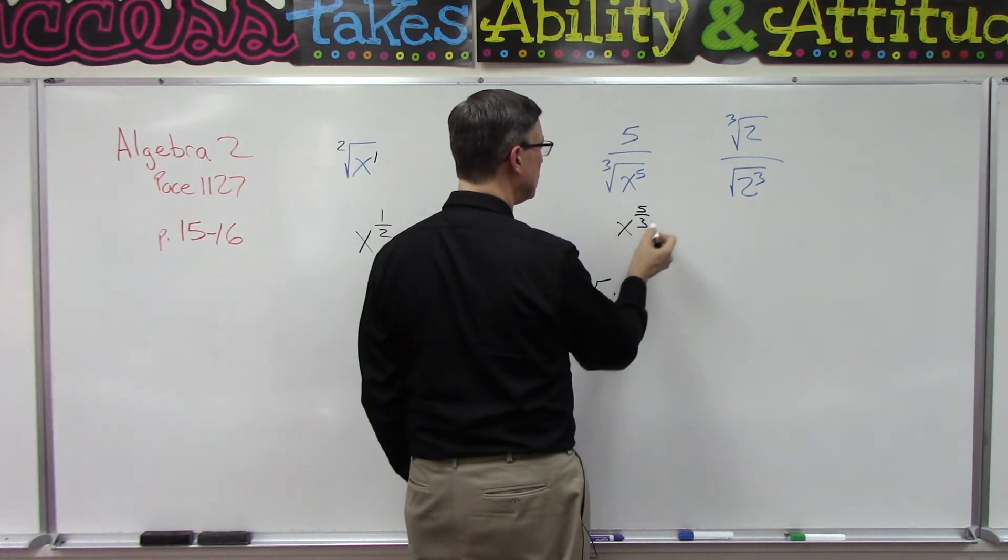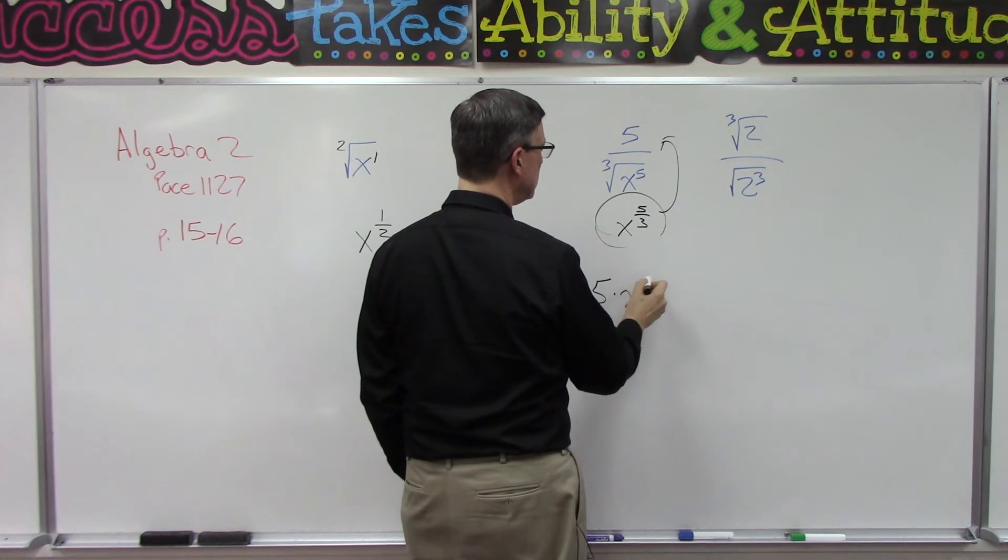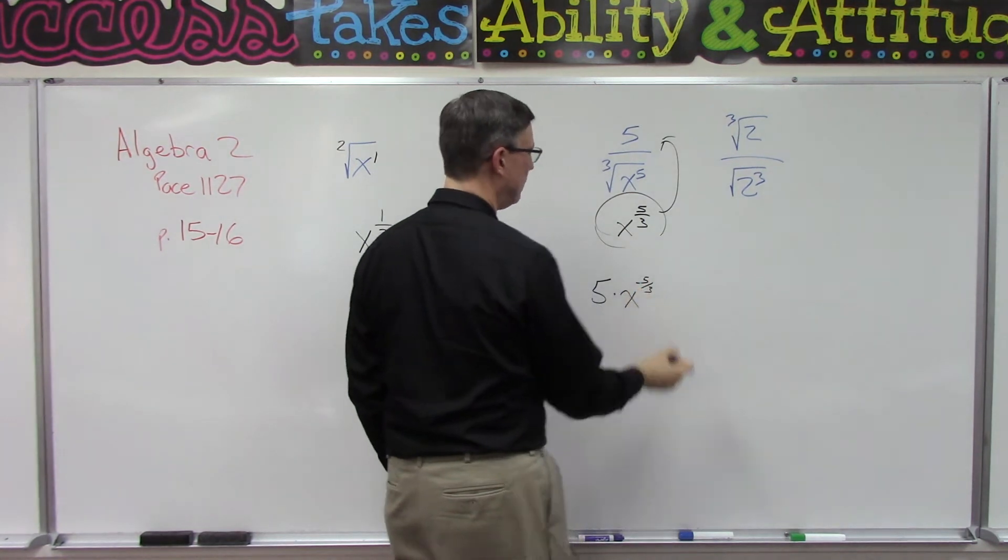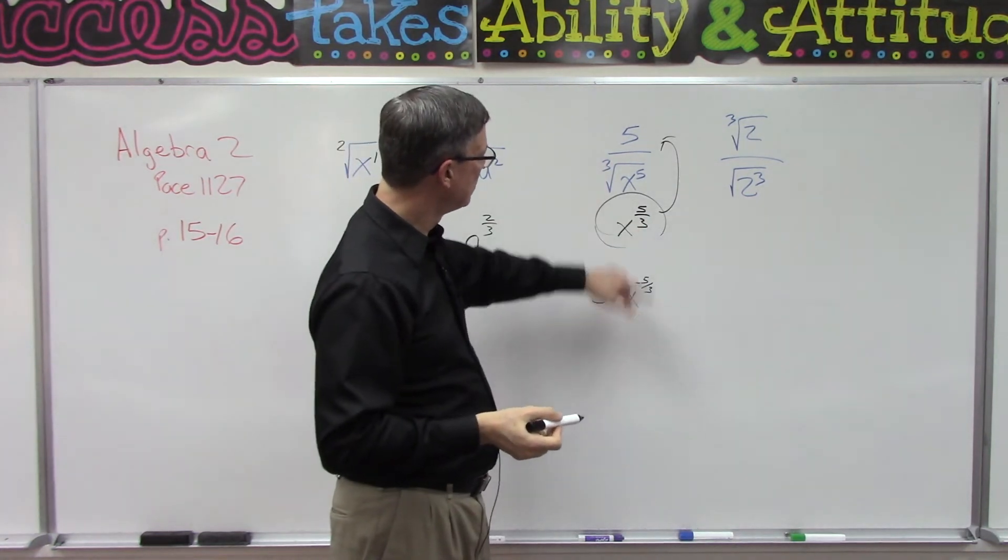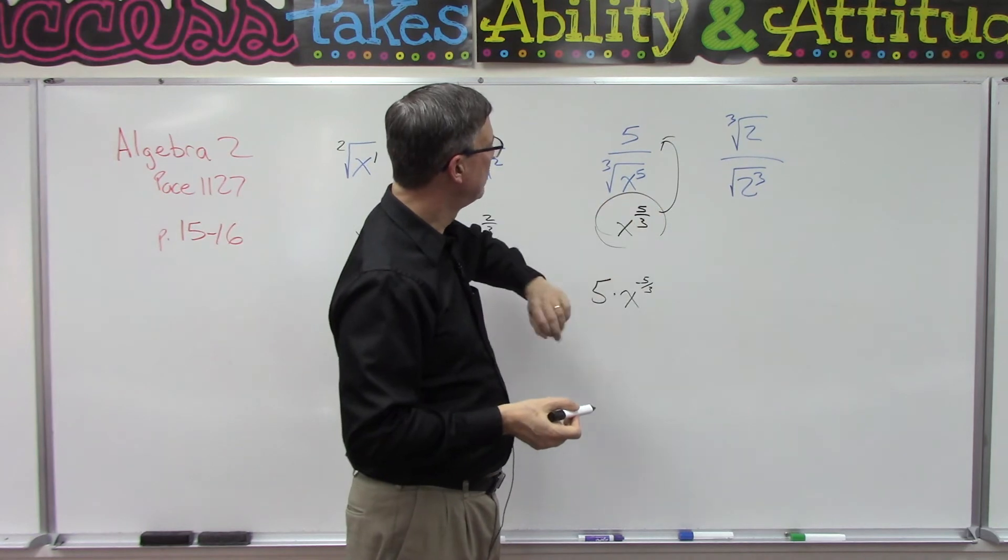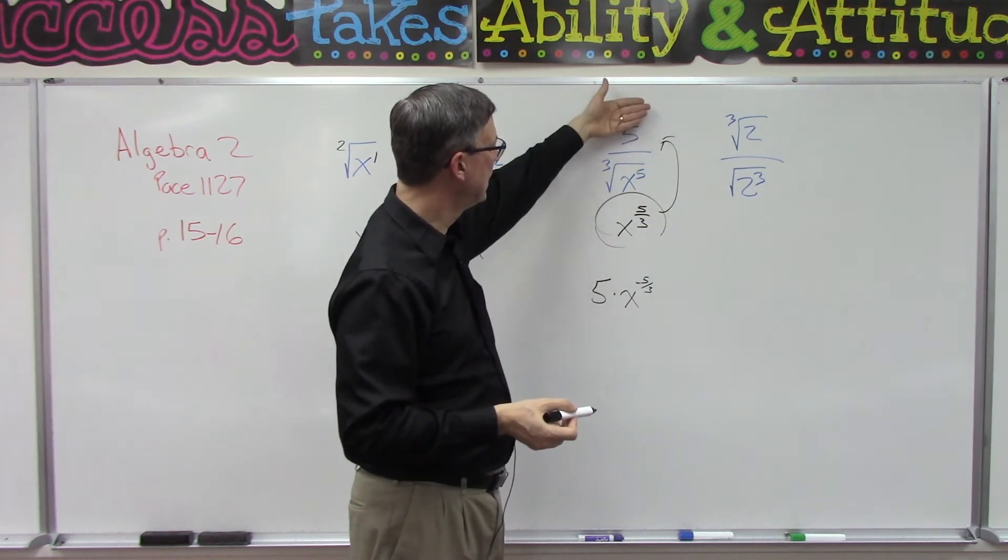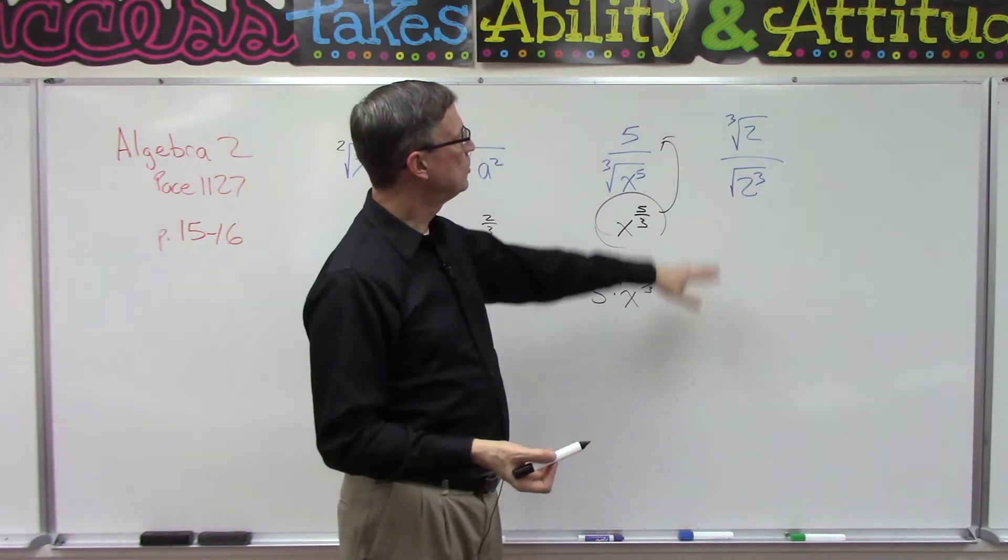And then up here I have 5. Now I could leave it as 5 over that, or I could write it as 5 times x to the - now when I take this whole thing to the top, the exponent changes to become negative 5 thirds. It's the opposite sign. Remember when we flip from one side to the other side of this line, so a positive 5 thirds denominator down here becomes negative 5 thirds on the top.